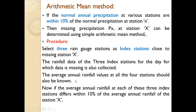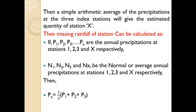The average annual rainfall of each index station is compared with the average annual rainfall of the missing station X. If the difference is within 10%, then the simple arithmetic mean method is used.